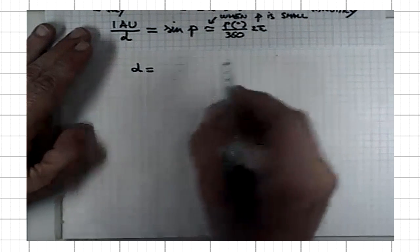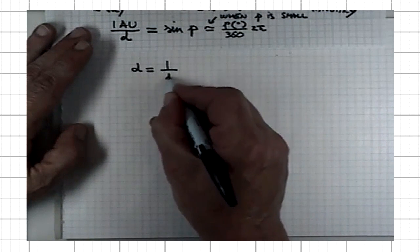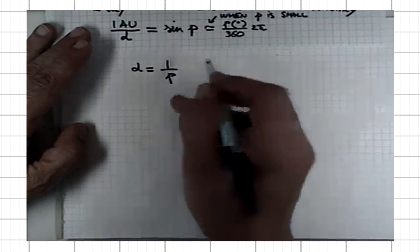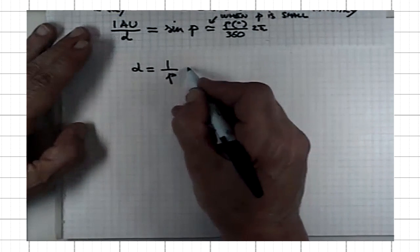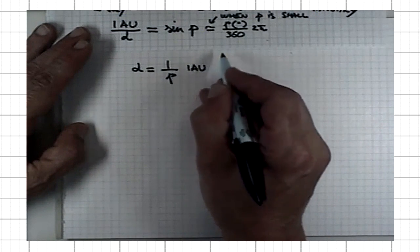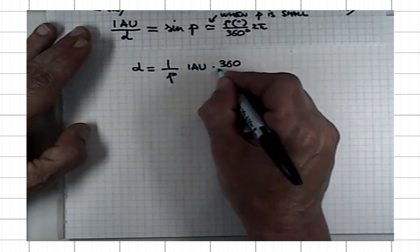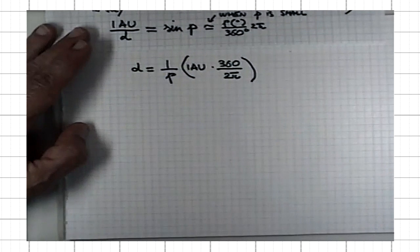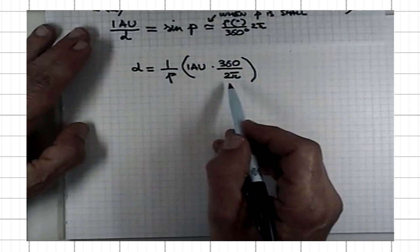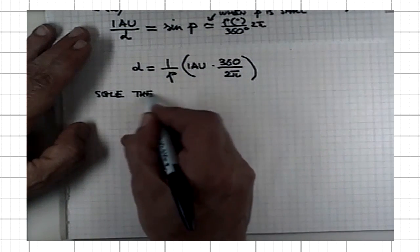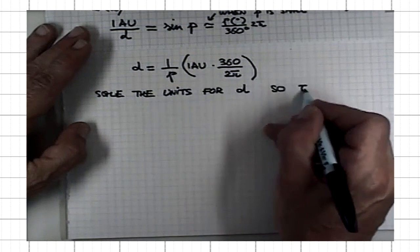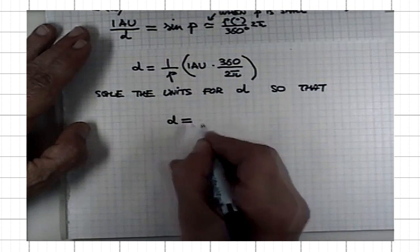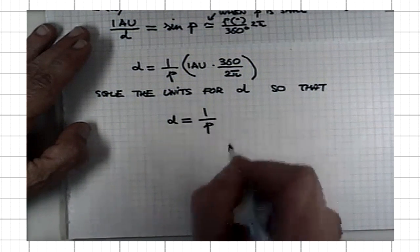Then here I would have, on this side, I would be left with 1 astronomical unit, and then I would have to multiply with 360 and divide with 2 pi. I will put this in brackets here. I can always scale my units so that the distance is simply 1 over the parallax angle.